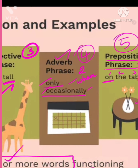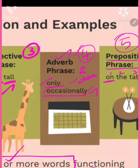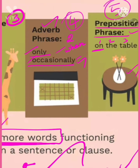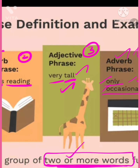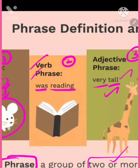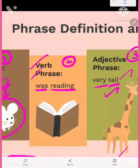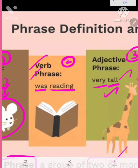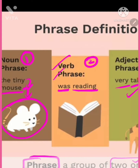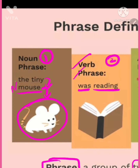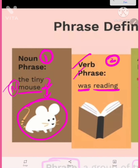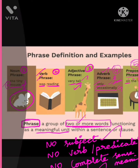To recap: 'occasionally' is an adverb, so 'only occasionally' is an adverb phrase. 'Tall' is an adjective, so 'very tall' is an adjective phrase. 'Reading' is a verb, so it forms a verb phrase. 'Mouse' is a noun, so it forms a noun phrase. That's it — thank you for watching. May God bless you all.